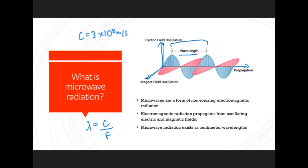You could also express this as: frequency equals the speed of light divided by the wavelength. In different circumstances it is more optimal to use either wavelength or frequency. For this presentation we're often going to use the wavelength. The wavelength of microwaves is proportional to 10 to the minus 2 meters, or centimeters.